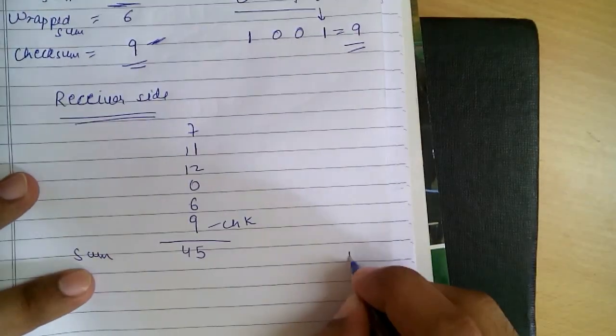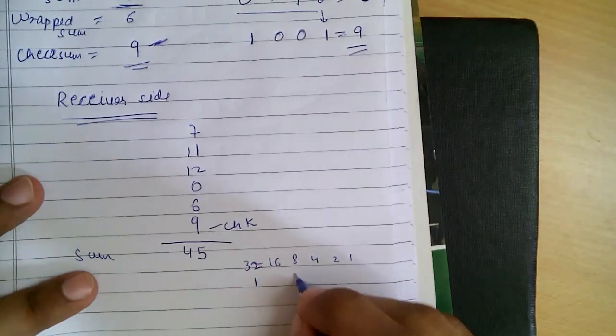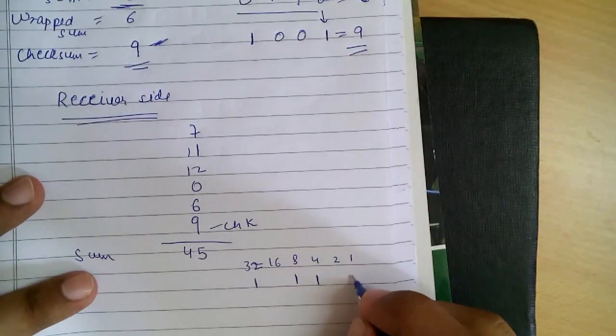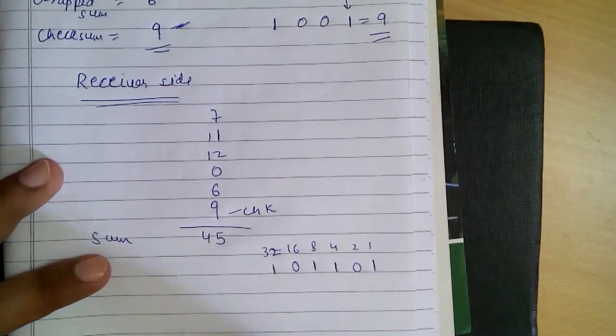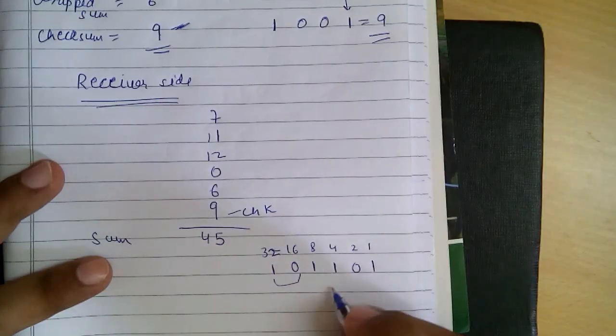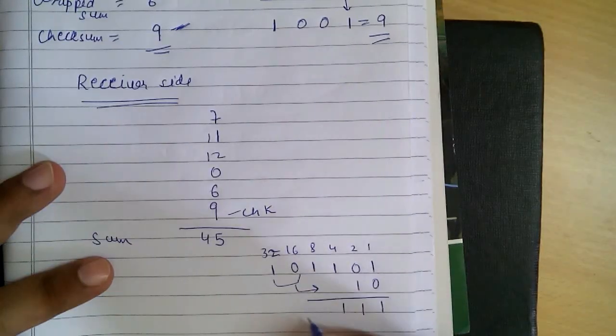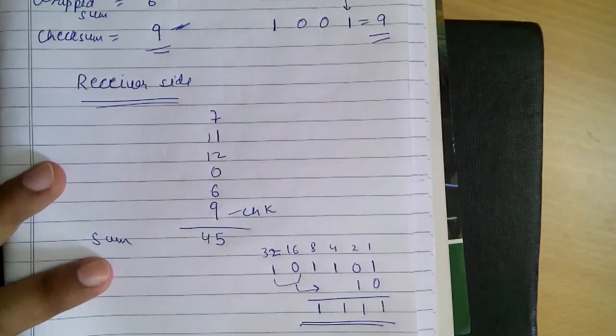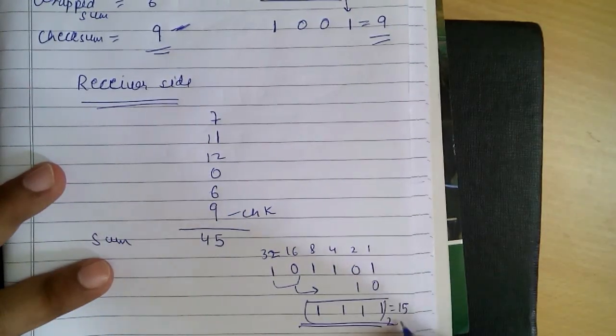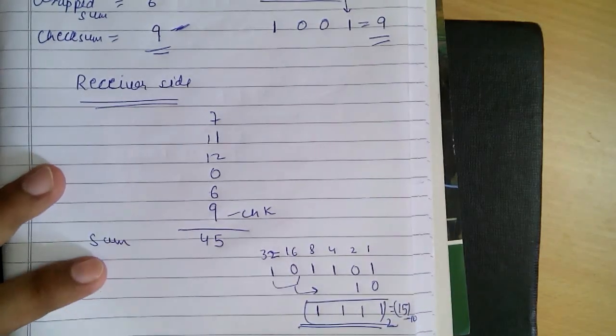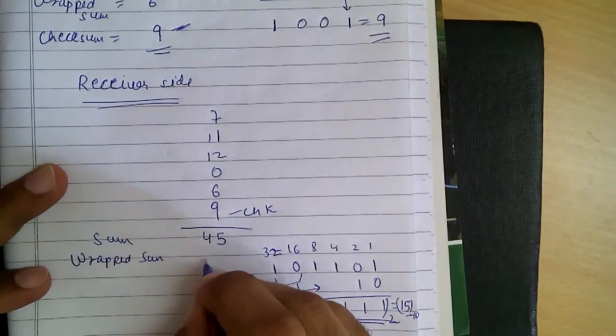The binary of 45 is 101101, which is 32 plus 8 plus 4 plus 1. Now we wrap it. Adding the overflow bits, we get 1111, which is the binary of 15. So our wrapped sum is 15.